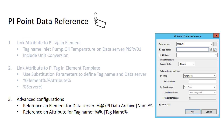Let's look at one final configuration — the most advanced. Instead of referencing the server either hard-coded or using %server%, if your PI Data Archive changes names you'd like to only have to change it once in your AF hierarchy. So what we're going to do is create an element called PI Data Archive in our AF structure with an attribute called name, and we're going to pull that in every time we need to reference the server name.